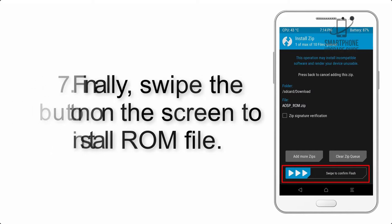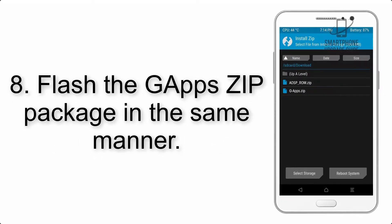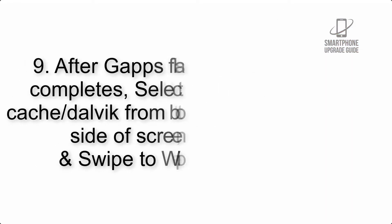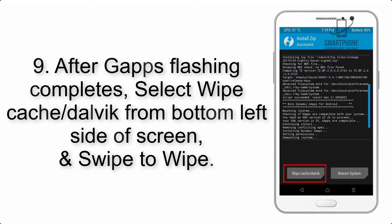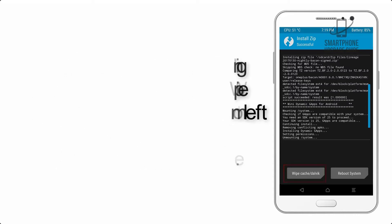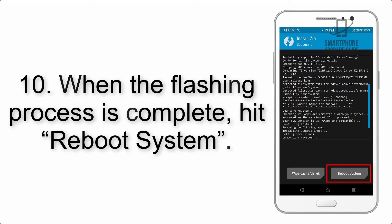Step 7: Swipe the button on the screen to install the ROM file. Step 8: Flash the GApps zip package in the same manner. Step 9: After GApps flashing completes, select Wipe Cache and Dalvik from the bottom left side of the screen and swipe to wipe.